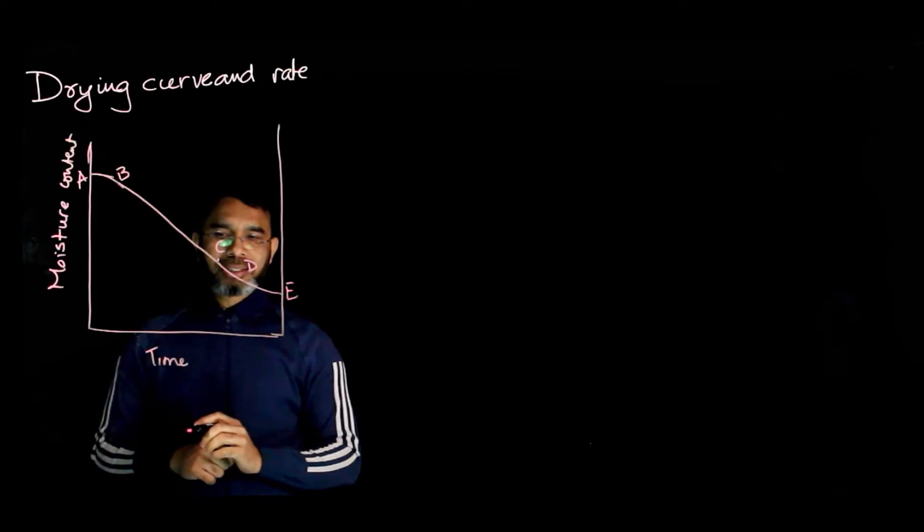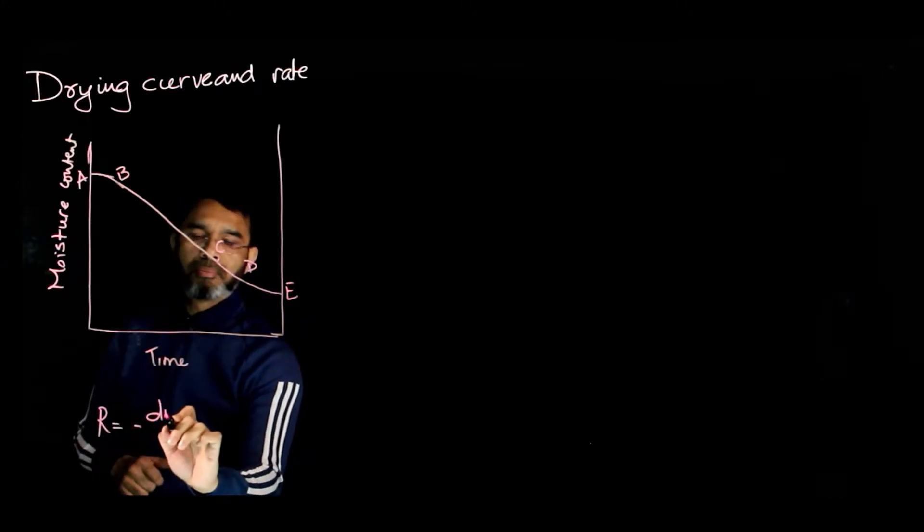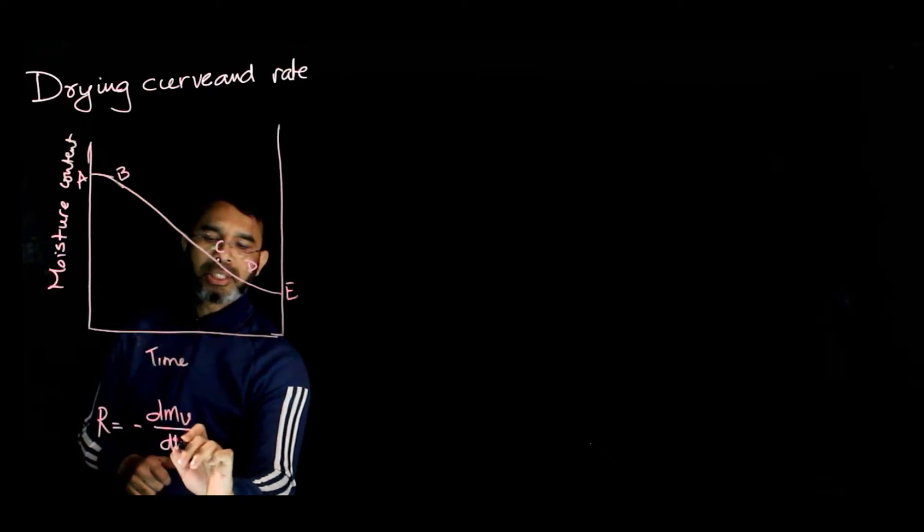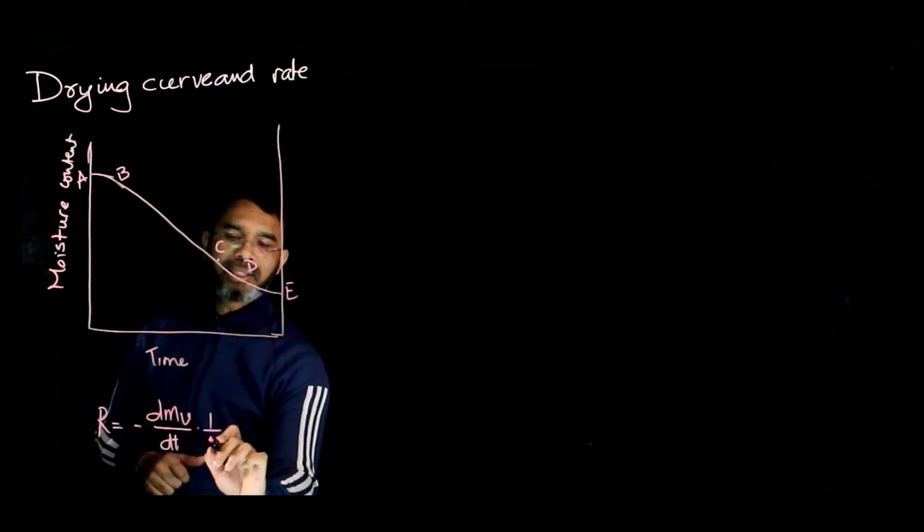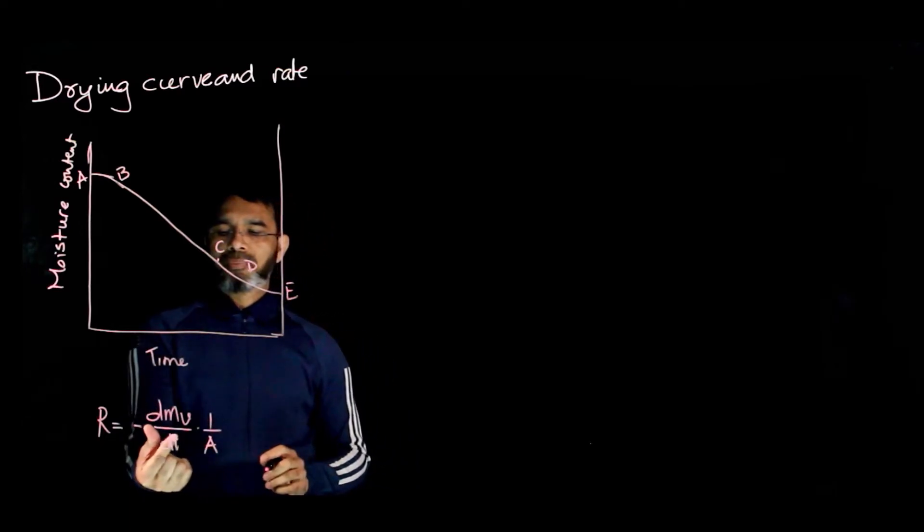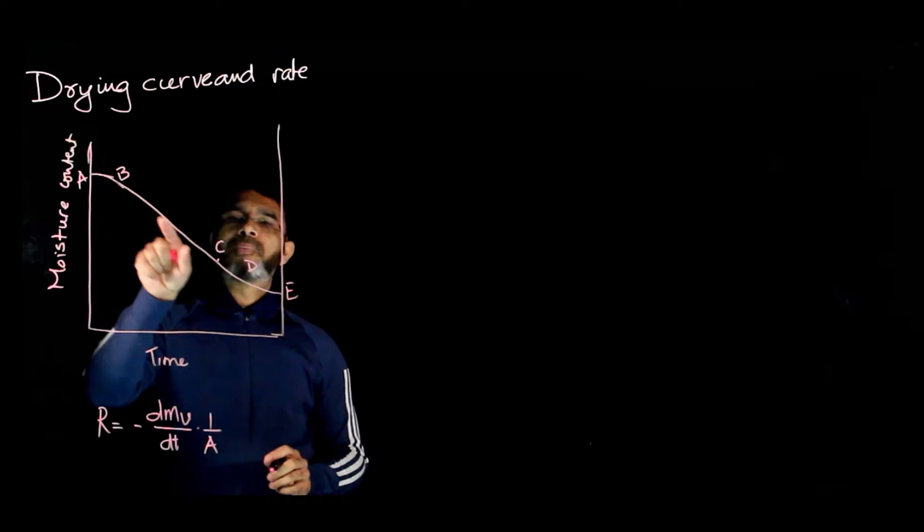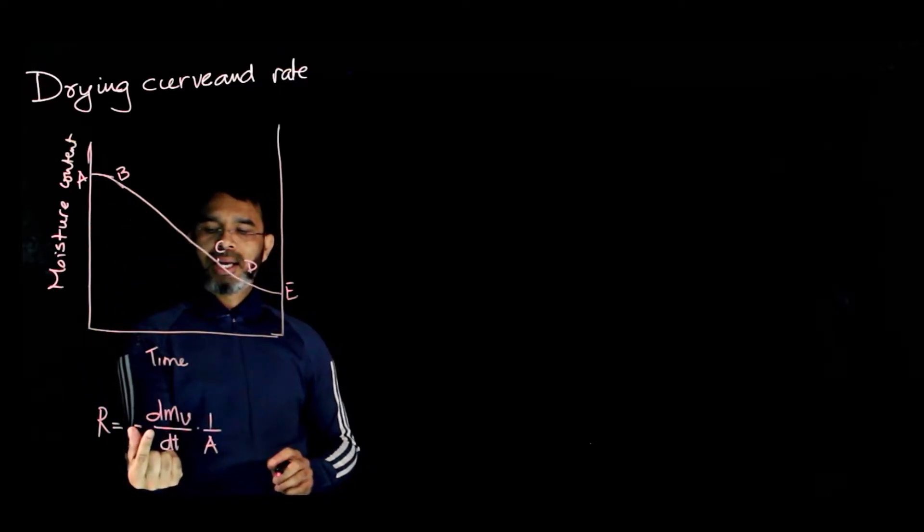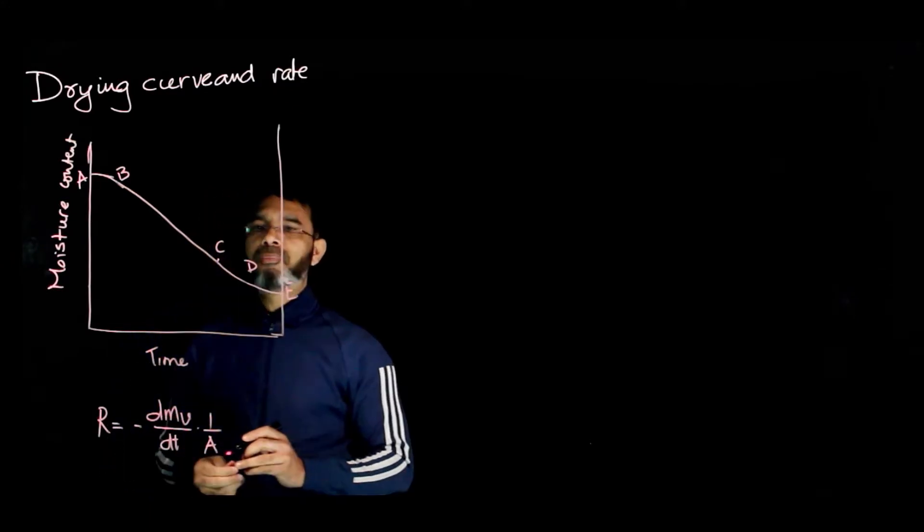We define drying rate as the rate of change of moisture content per unit area. With area constant, the drying rate is simply the slope of this line. The slope is negative and decreasing, so you need a negative sign to make the rate positive.